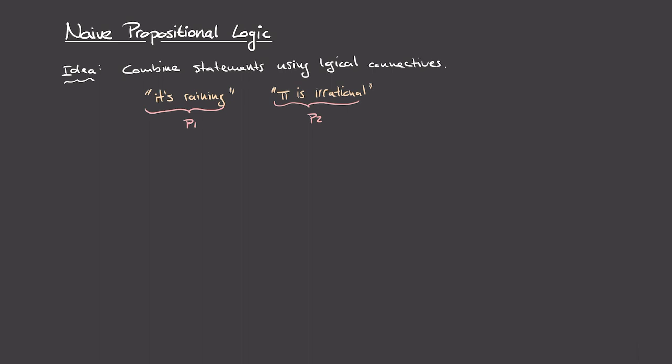For instance, I could combine these two statements using 'or', which in our notation will be denoted by this v-type symbol. So whenever I have two statements like 'it's raining' and 'pi is irrational', I can combine them using or to get a larger statement, which in this case says 'it's raining or pi is irrational'.